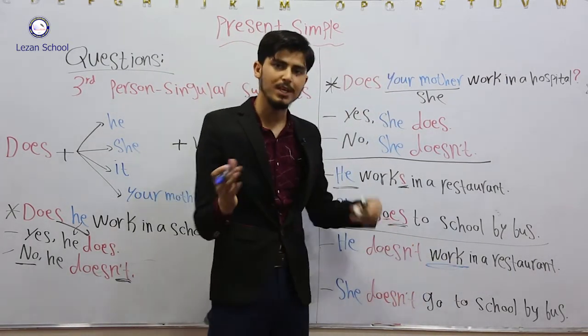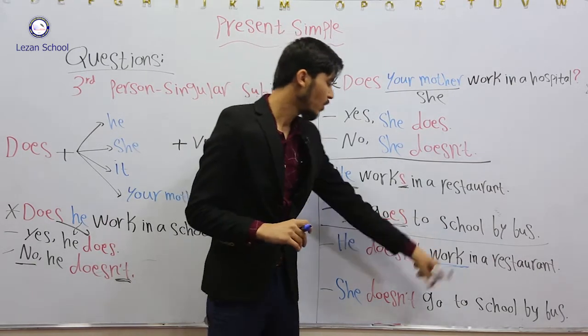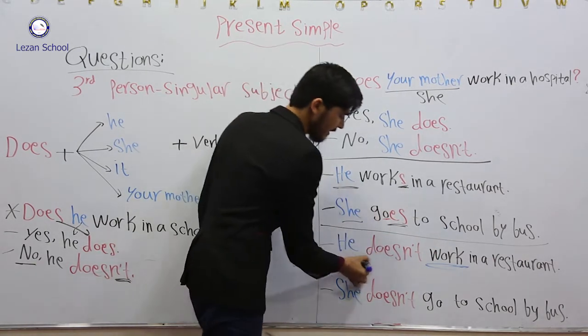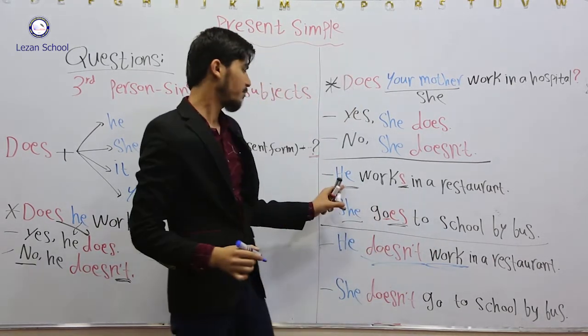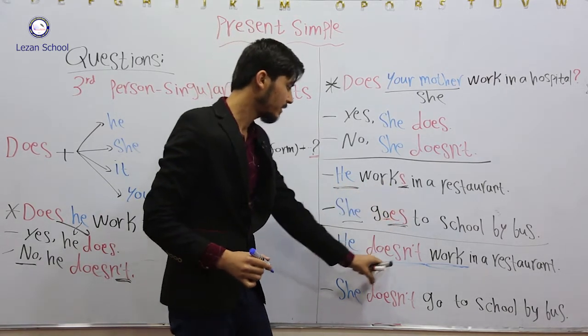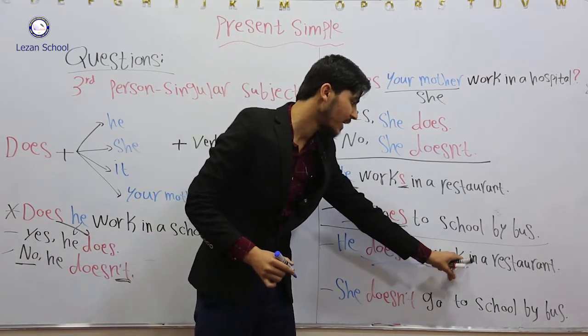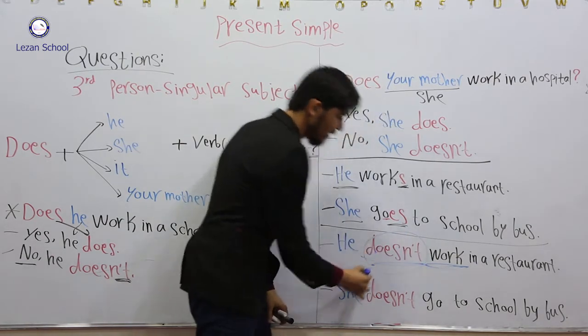we use the verb in present simple without S or ES, because it is negative. But in positive sentences, we add S or ES. In negative sentences, we don't add ES because we have doesn't.